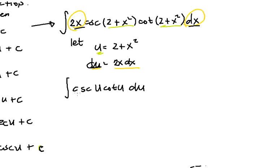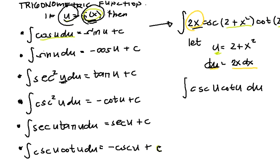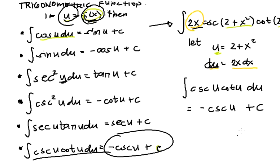So finally we have cosecant u cotangent u du. We can now integrate this, which equals negative cosecant u plus c.